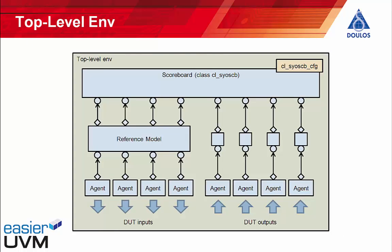Then we have to connect everything together at the top level. In our top-level UVM Env we have instances of agents connected to the DUT inputs and DUT outputs, an instance of the Siocil scoreboard component, an instance of a reference model, and a conversion box for each of our DUT output agents. The Easier UVM code generator allows you to instantiate multiple scoreboards and multiple reference models, but reference models and scoreboards always come in pairs — there is always exactly one scoreboard associated with each reference model. I won't show the full source of the top-level Env, which mechanically instantiates each component and connects analysis ports to the corresponding analysis exports, but I will show how to do the factory overrides and configuration for the scoreboard component.